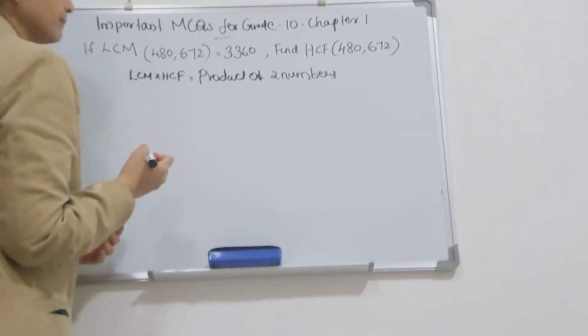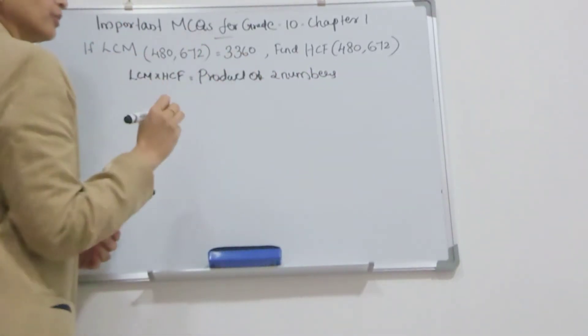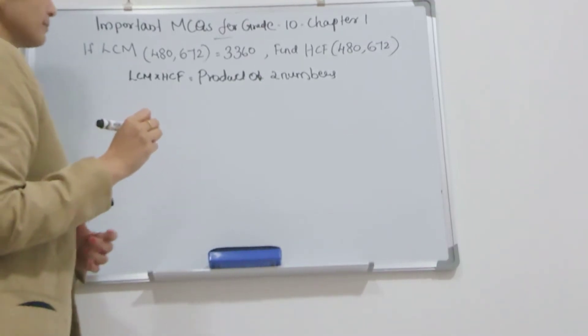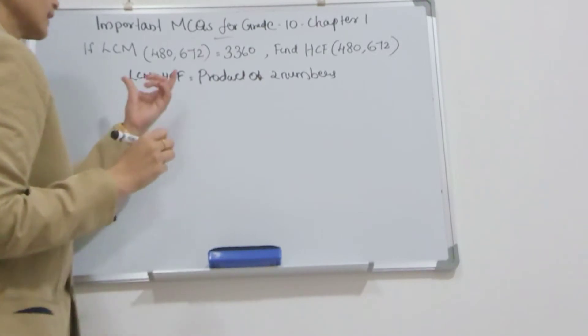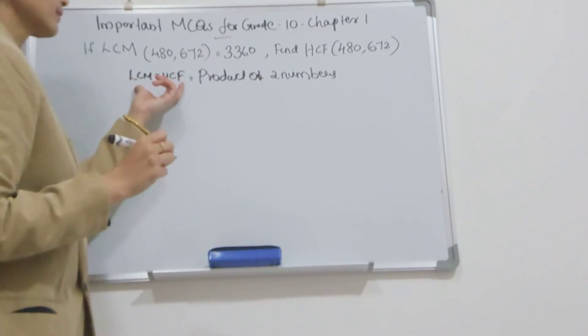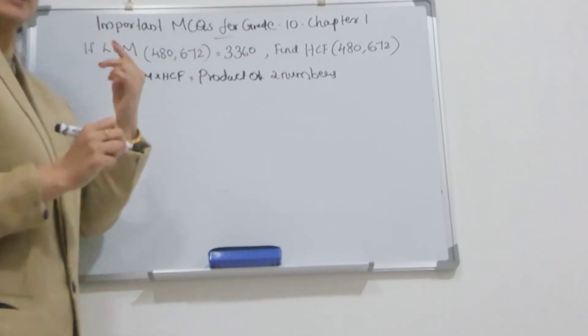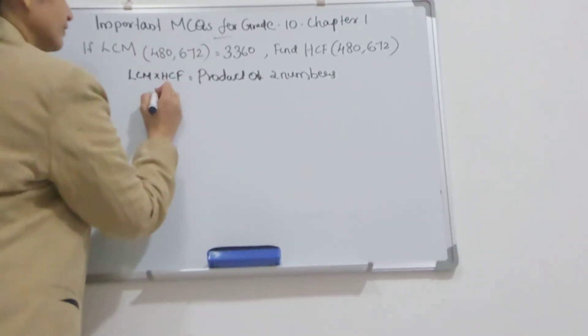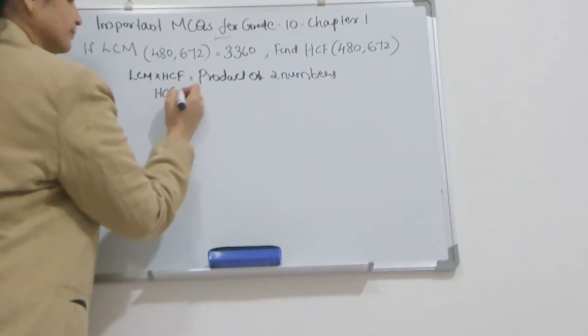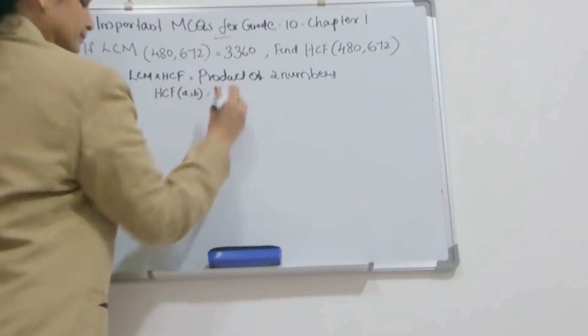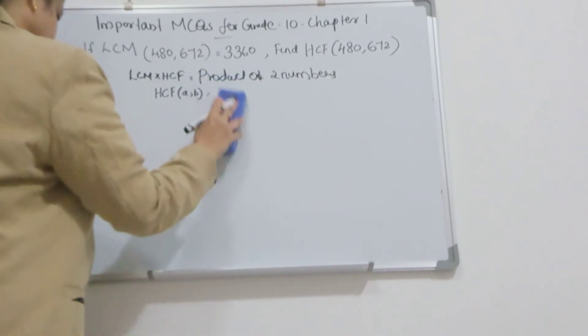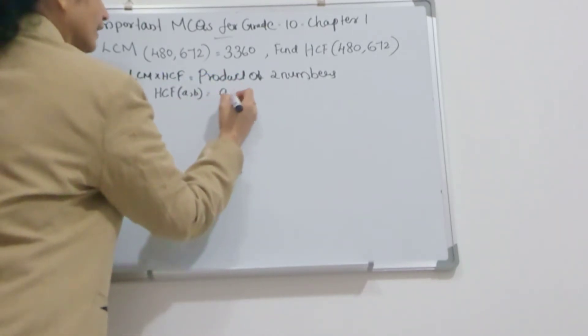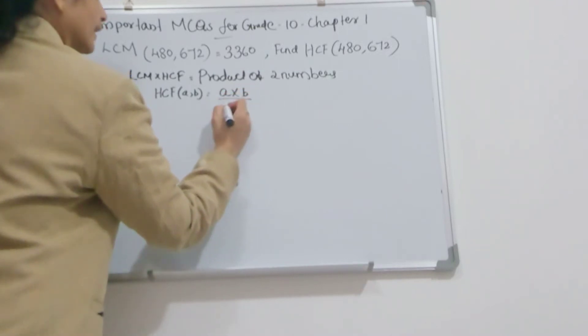HCF × LCM of 2 numbers equals the product of those 2 numbers. So here, HCF is what you have to find, LCM is given. So HCF equals - HCF of A and B equals A × B divided by LCM.